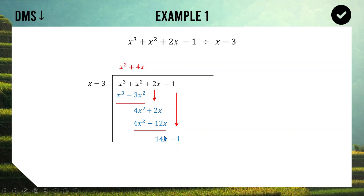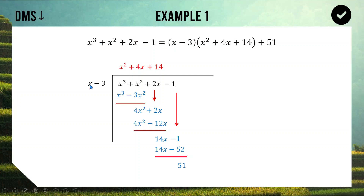Back through the process again. D for Divide: 14x divided by x gives us 14, so +14 goes up top. M for Multiply: 14 times (x − 3) gives 14x and −42. S for Subtract: the 14x cancels out, and −1 take away −42 gives an answer of 41... so we have our remainder. Because we can't do that divided by x, we stop there. We can rewrite the original polynomial as (x − 3)(x² + 4x + 14) plus the remainder 41.